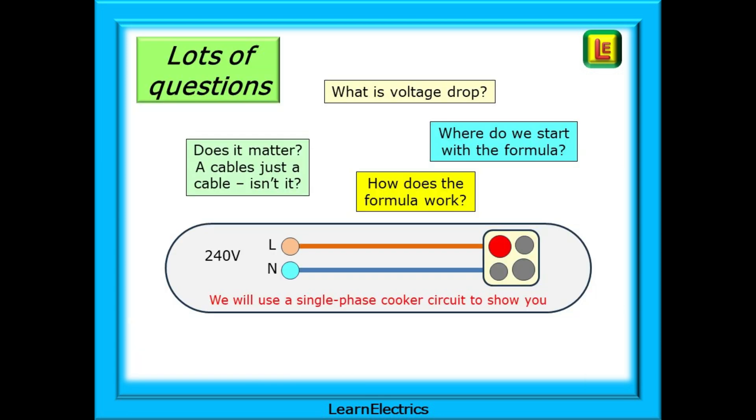Over time, we've had lots of questions about voltage drop. What is voltage drop for instance? Where do we start with the formula, and can we have some examples to help us understand? How does the formula work? And even, why does it matter about voltage drop? How does it affect the circuit?